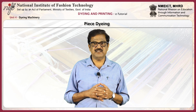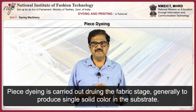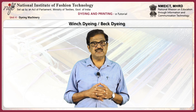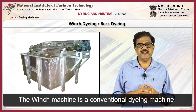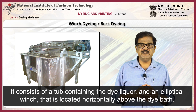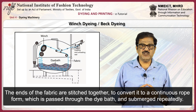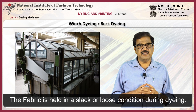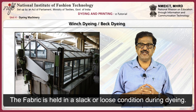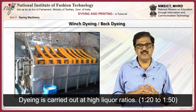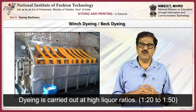Next, we will discuss about piece dyeing. Piece dyeing is carried out at the fabric stage, generally to produce a single solid color in the fabric. The winch machine, also called beck dyeing, is a conventional dyeing machine. It consists of a tub containing the dye liquor and an elliptical winch located horizontally above the dye bath. The ends of the fabric are stitched together into a continuous rope form, which is passed through the dye bath and submerged repeatedly. The fabric is held in a slack or loose condition during dyeing, carried out at higher liquor ratios of about 1:20 up to 1:50.